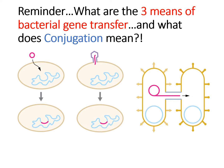As a reminder, before we get into conjugation, let's review what the three main forms of bacterial gene transfer are. The first one, which you have done a lot with in our course, is transformation. For transformation, you notice that it is a naked piece of DNA — meaning a piece of DNA all by itself, not within any other cell — and it is entering a bacterial cell. That's how the new DNA enters in transformation.